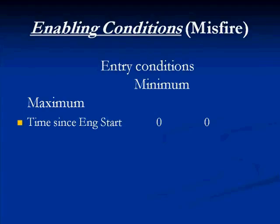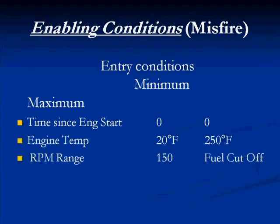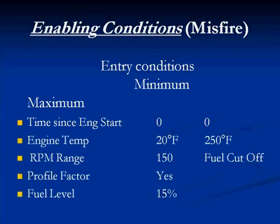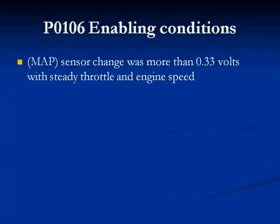Enabling conditions define what condition the vehicle must be meeting in order to run a monitor, or to run a test inside a monitor and set a diagnostic trouble code. When we look at enabling conditions for a misfire monitor, we have entry conditions with minimum and maximum values, then time since start, engine temp, RPM, profile factor, and fuel level. Profile factor must be 'yes' — meaning the computer has to have learned the small variations in the crankshaft position sensor in order to meet the enabling conditions to run the monitor. Here are P0106 enabling conditions — it's a MAP sensor code. The change was more than three-tenths of a volt with steady throttle and engine speed.